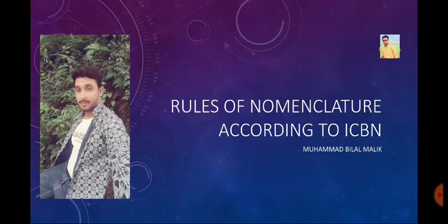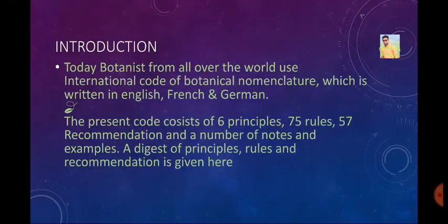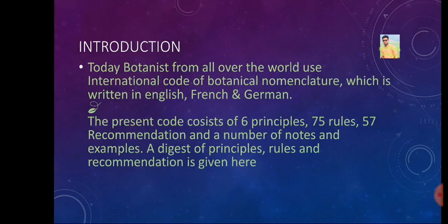According to the International Code of Botanical Nomenclature (ICBN), today botanists follow the ICBN, which is written in English, French, and German. The present Code has 6 principles, 75 rules, 57 recommendations, and a number of notes and examples. Let's now go through the digest of these principles, rules, and recommendations.